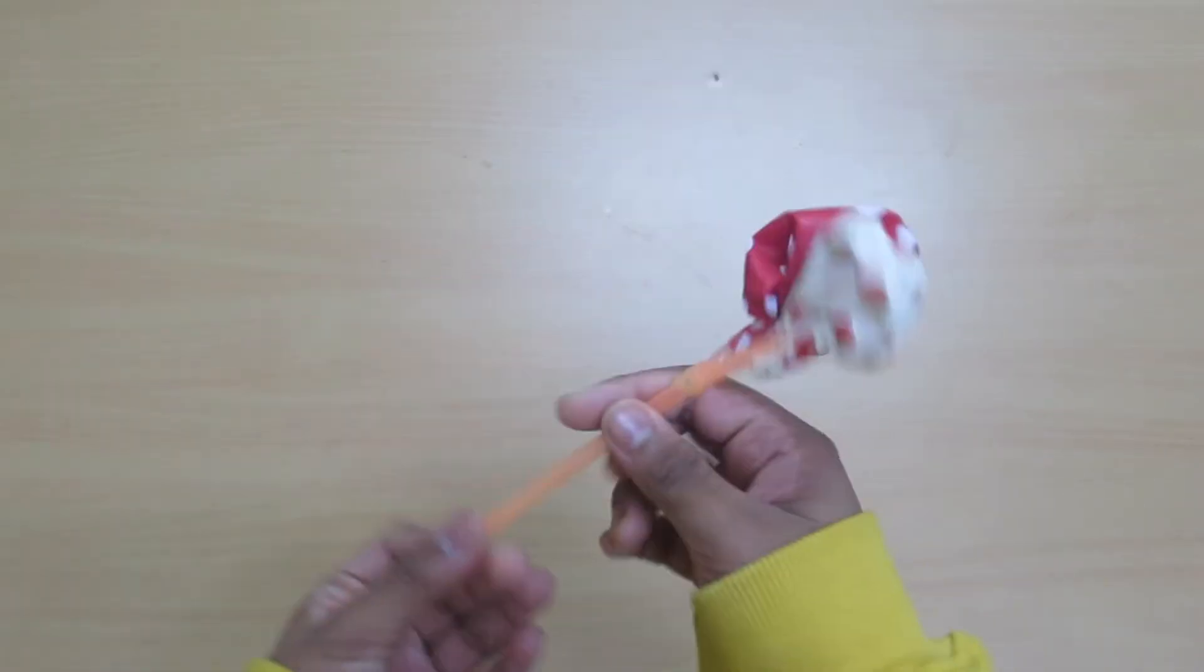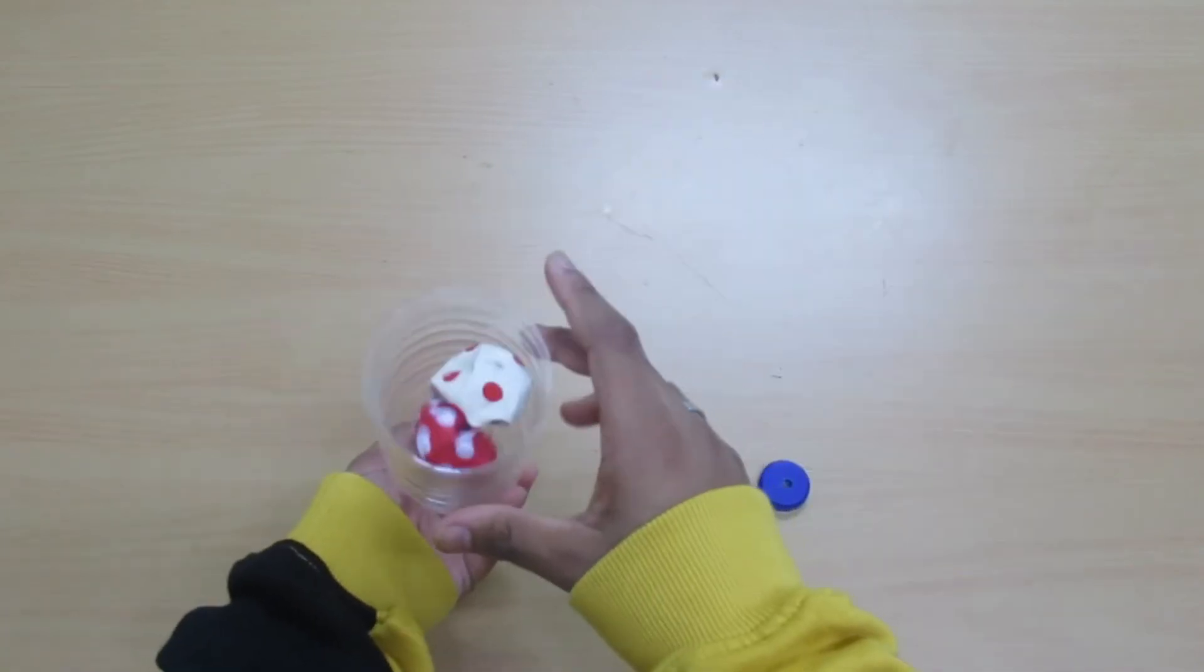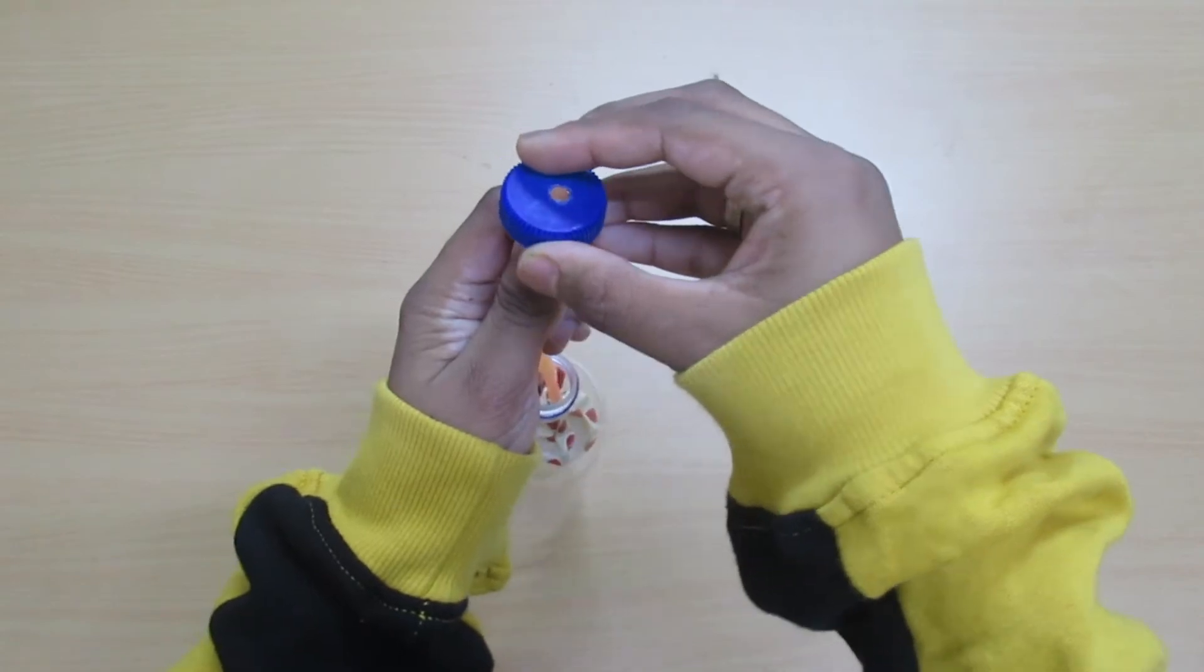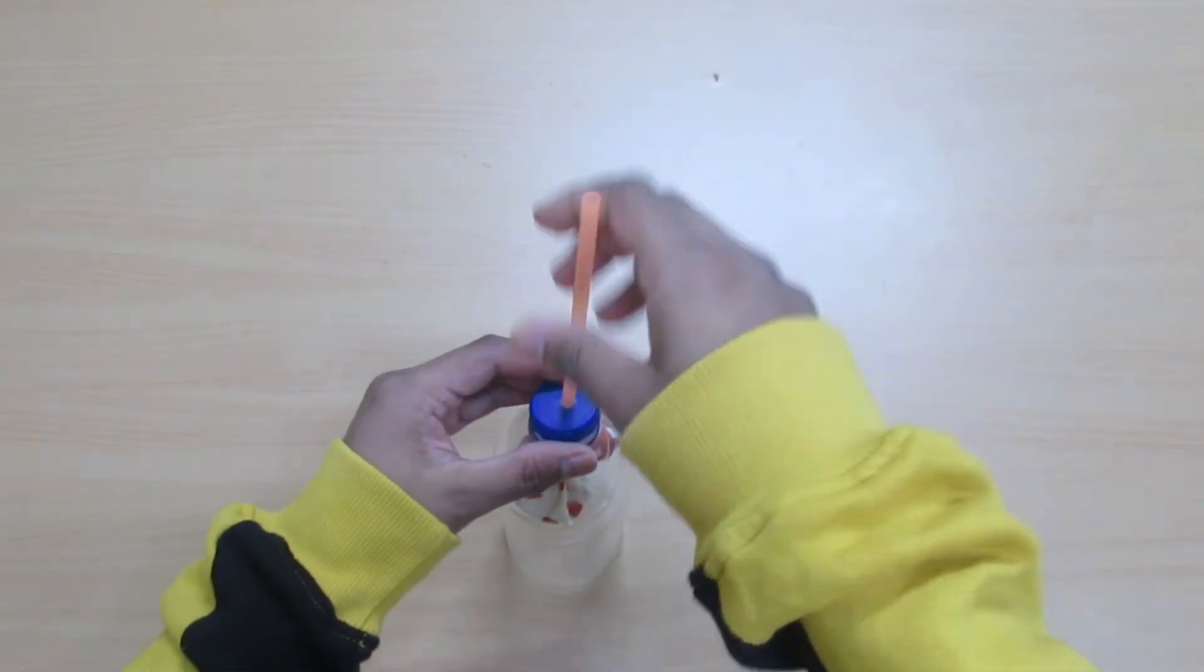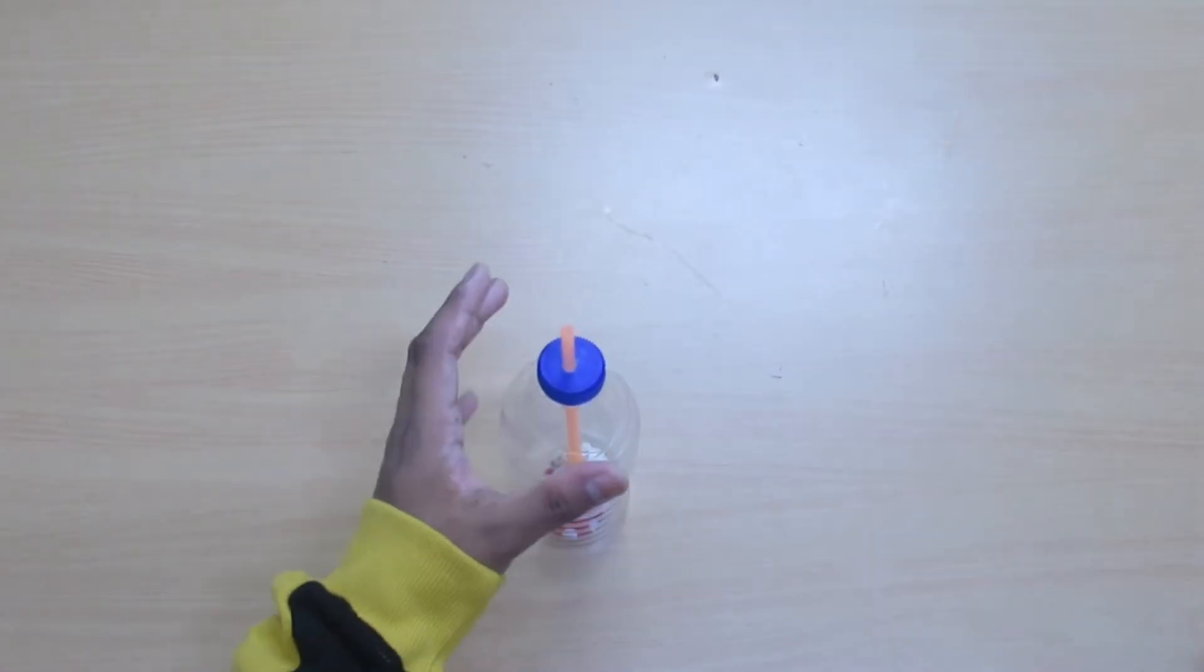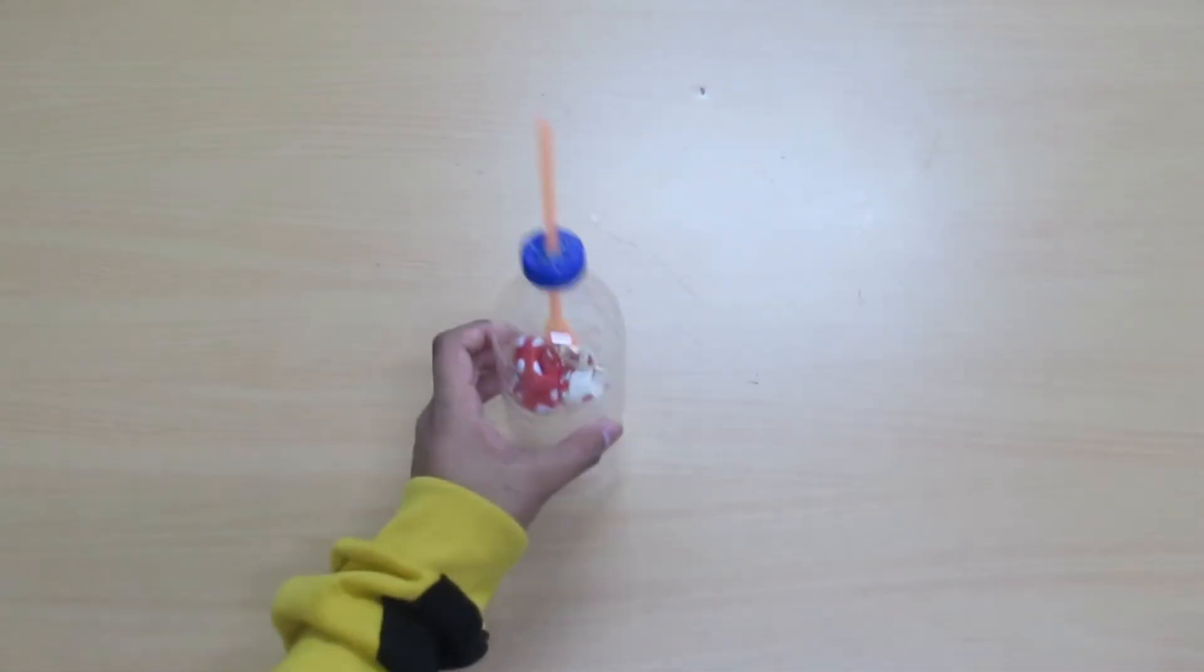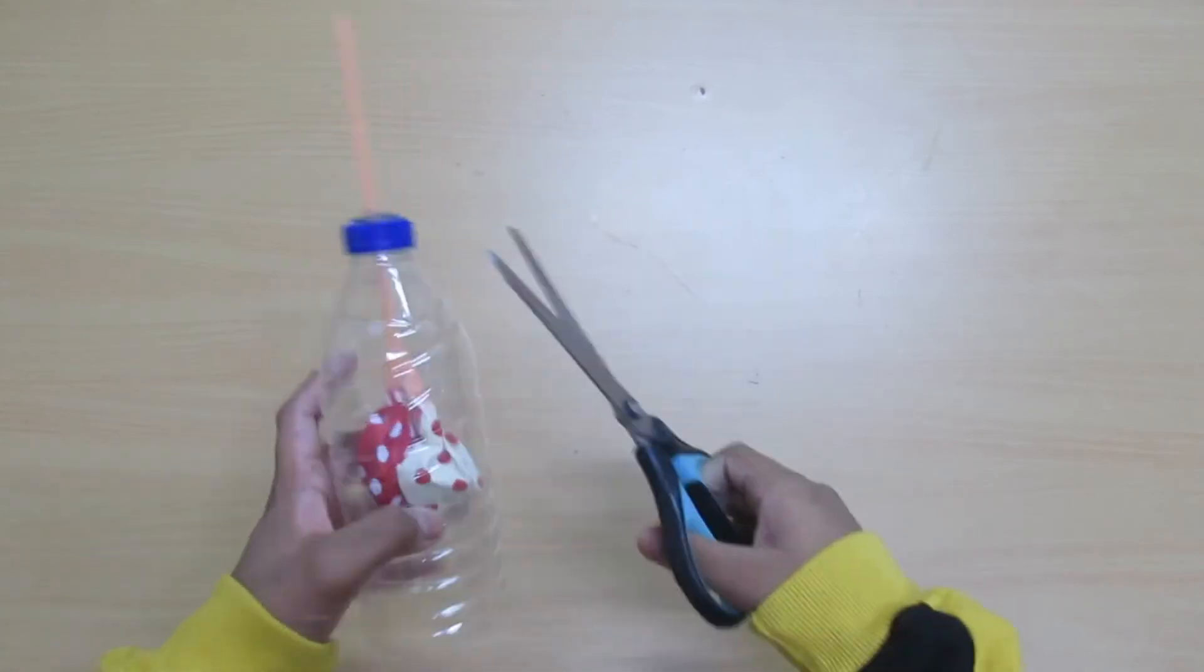Now I have attached both balloons. Now take the bottle and put it through the bottom and close the cap and hot glue it to prevent air leak. Now I have hot glued it. Now cut the excess.